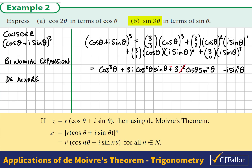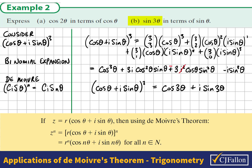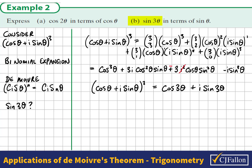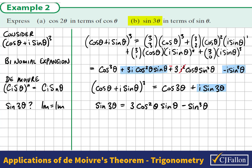We can also use De Moivre's Theorem: raising to the power of 3 multiplies the argument by 3, giving us cos3θ + i sin3θ. We are looking for an expression for sin3θ, and we see sin3θ appears as an imaginary term in the De Moivre's expansion. Imaginary terms must equal imaginary terms in a complex equation, so i sin3θ must equal the imaginary terms in the binomial expansion. Therefore sin3θ equals 3cos²θ sinθ minus sin³θ.